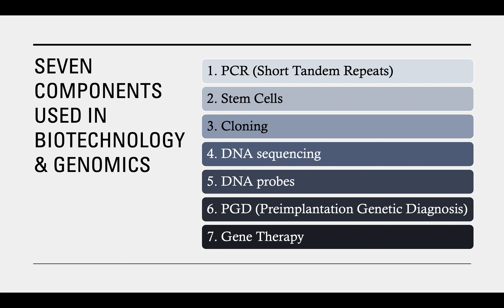Now I'd like to talk about the seven components used in biotechnology and genomics. The seven components are: PCR, which uses short tandem repeats of DNA; stem cells; cloning; DNA sequencing; DNA probes; PGD or pre-implantation genetic diagnosis; and gene therapy. These don't go in a specific order — basically these are the ways that scientists work within biotechnology, especially for biomedical research. One of your objectives is to remember the seven components and how they work.